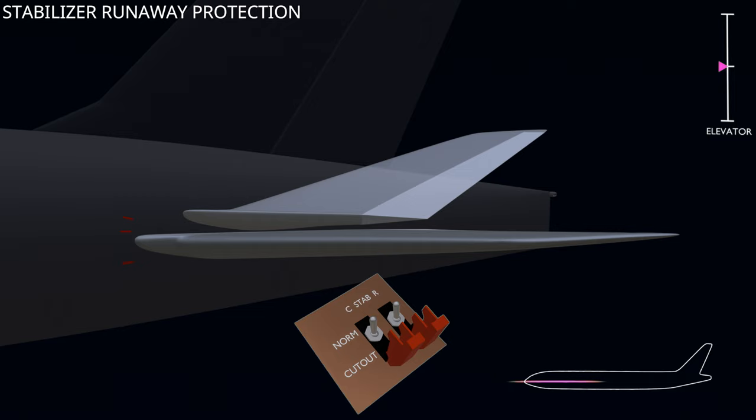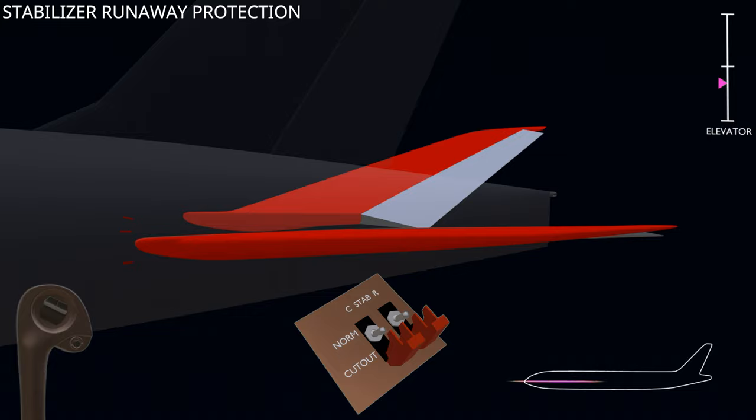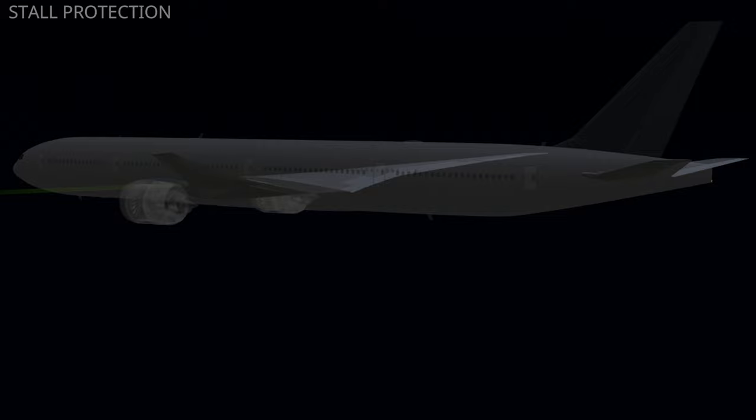The pilot can also manually stop the stabilizer runaway by using the stabilizer cutout switches. With the stabilizer in the cutout position, pitch trim is still available. The elevator moves for trimming and stays there. Force is not offloaded to the stabilizer.